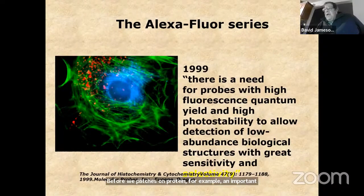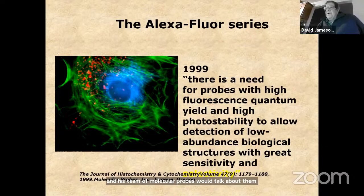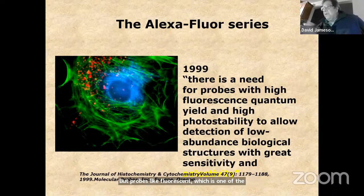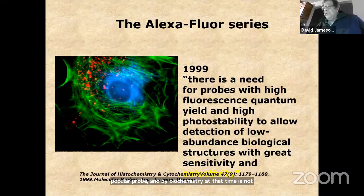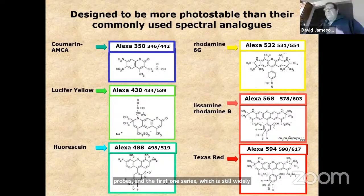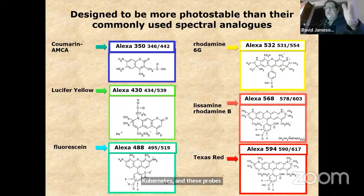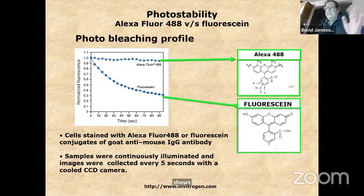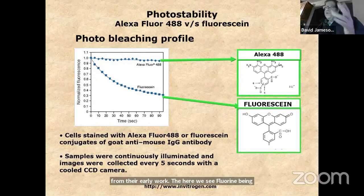An important development was in 1999 when Haugland and his team at Molecular Probes recognized the need for probes with high photostability and high quantum yield. In the 90s, fluorescent microscopy became more and more important, but probes like fluorescein bleach very readily under a microscope. This started a revolution of photostable probes. The first series, still widely used today, are the Alexa Fluor series — derivatives of coumarin, rhodamines, and fluoresceins. These probes are very bright and very photostable. Here we see fluorescein being bleached under constant illumination while Alexa Fluor doesn't bleach nearly as much.